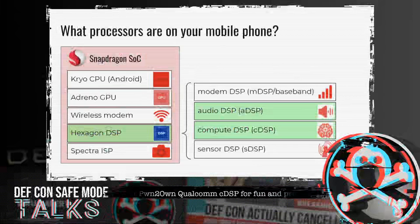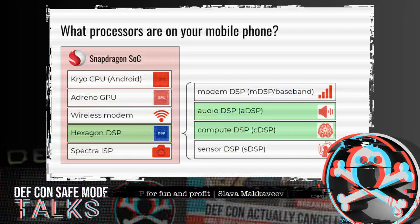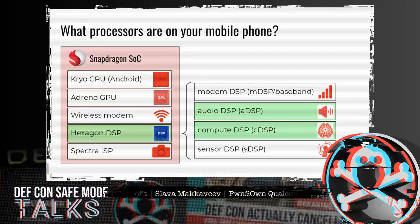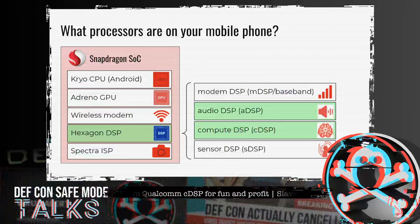Let's begin with a question: do you know how many processors are on your mobile phone? The answer is many. A single Snapdragon system on a chip embedded in Pixel, Samsung, Xiaomi, LG, OnePlus, Sony and other devices may include multiple CPU cores, an Adreno GPU, a Snapdragon modem, a Hexagon digital signal processor, and Spectra image signal processors.